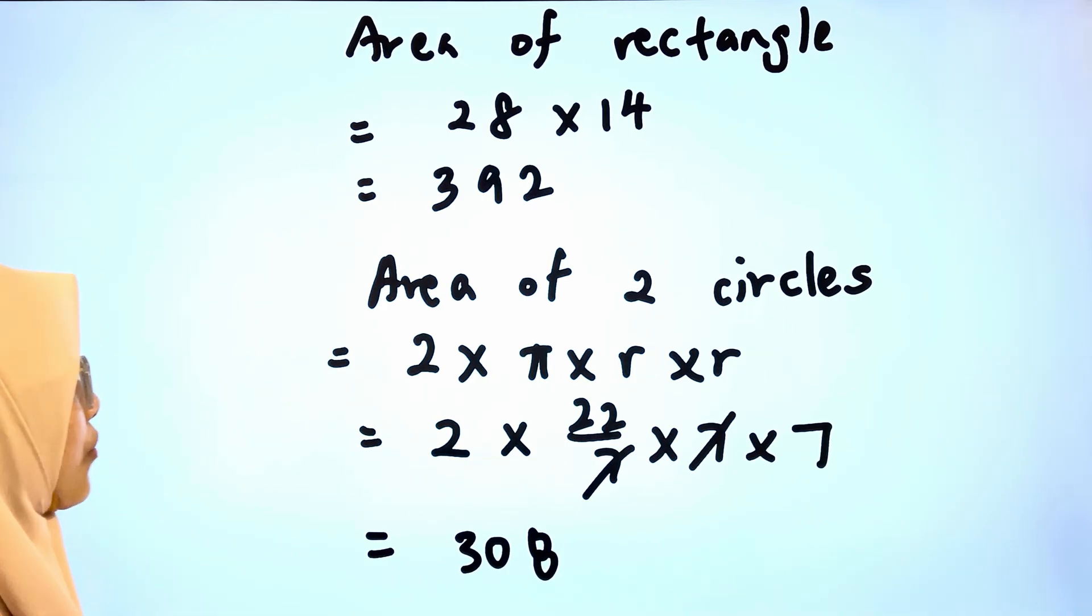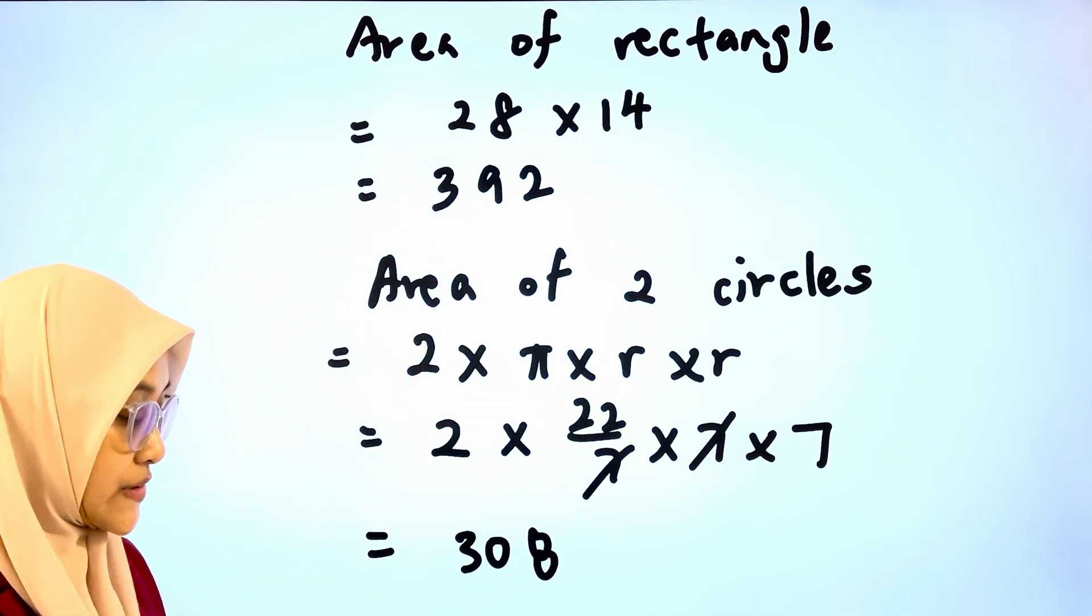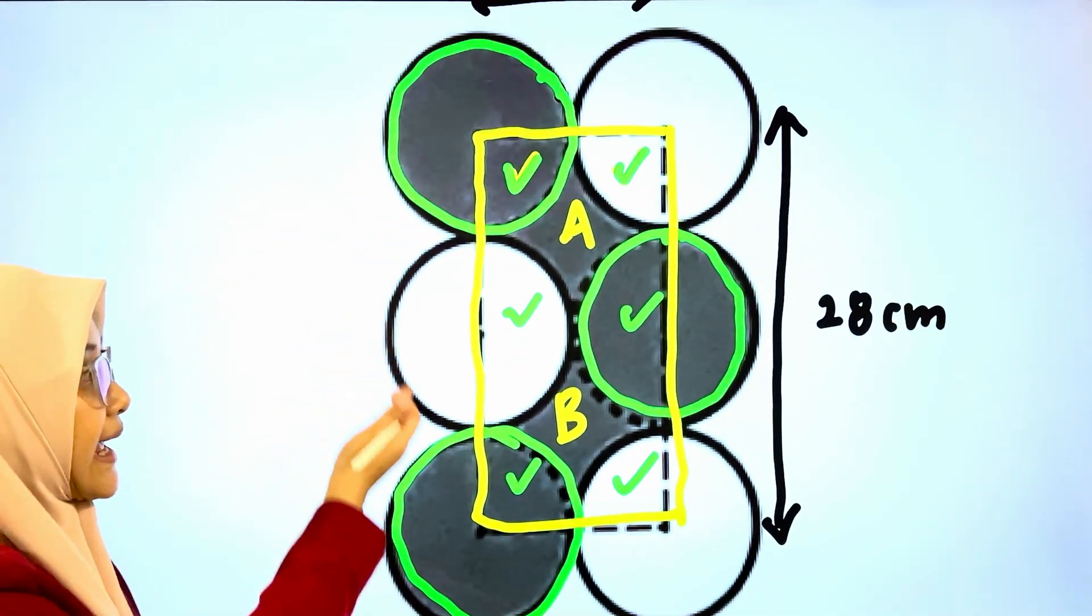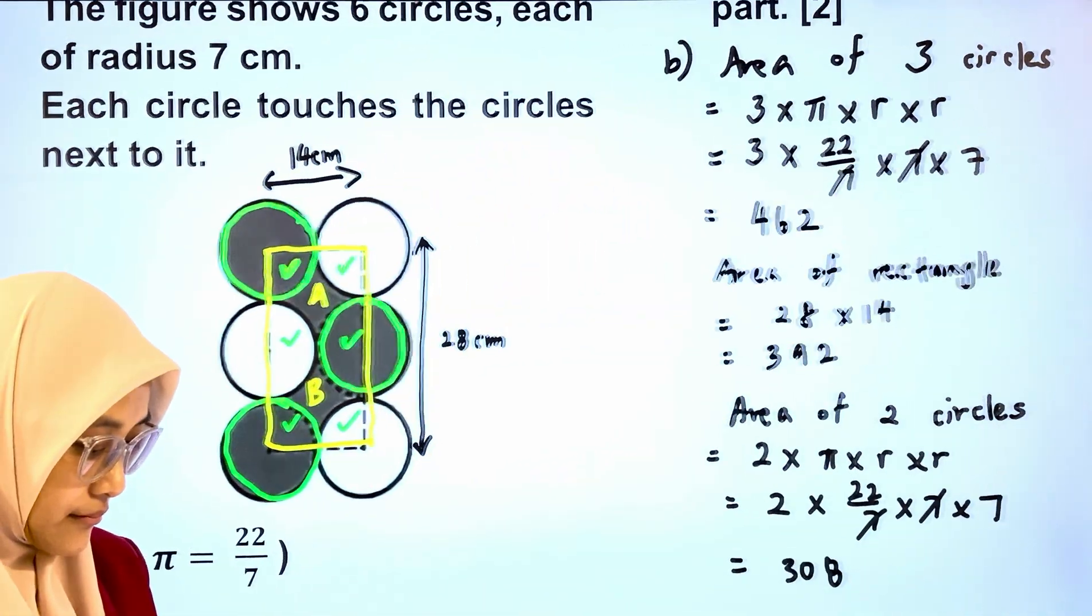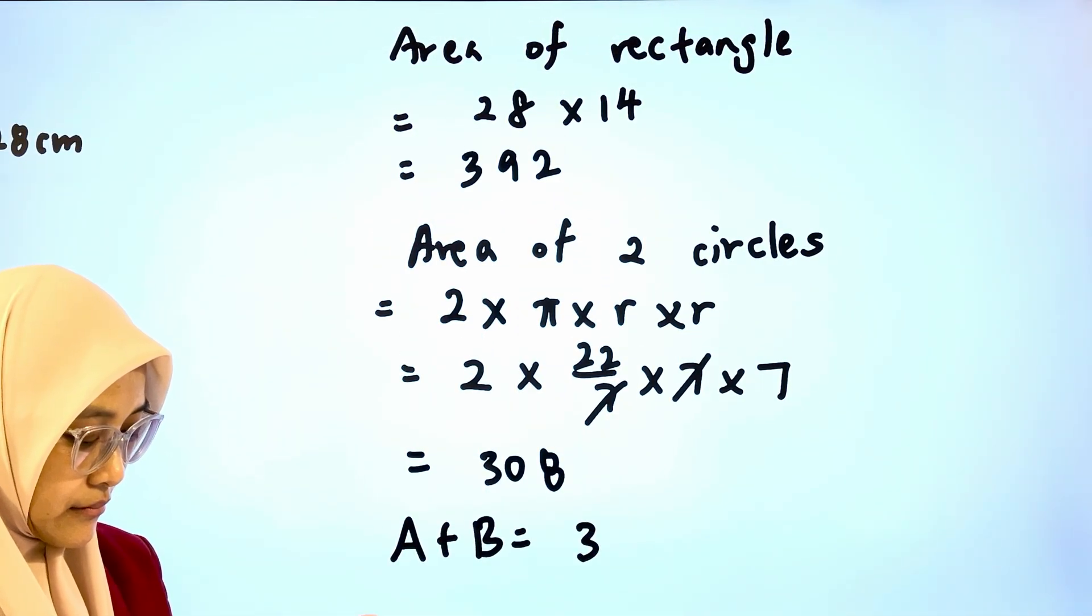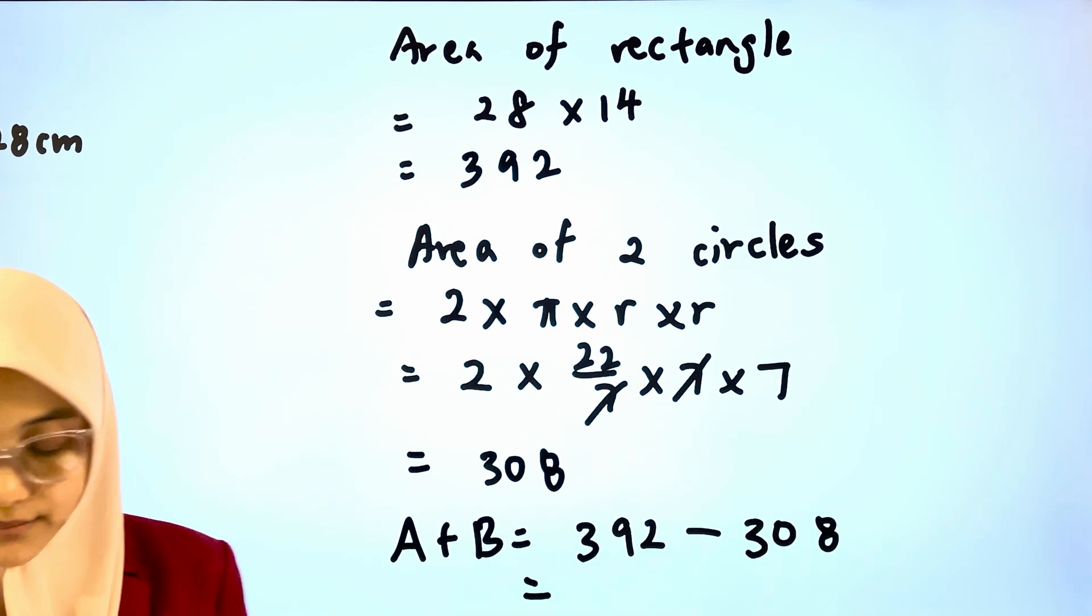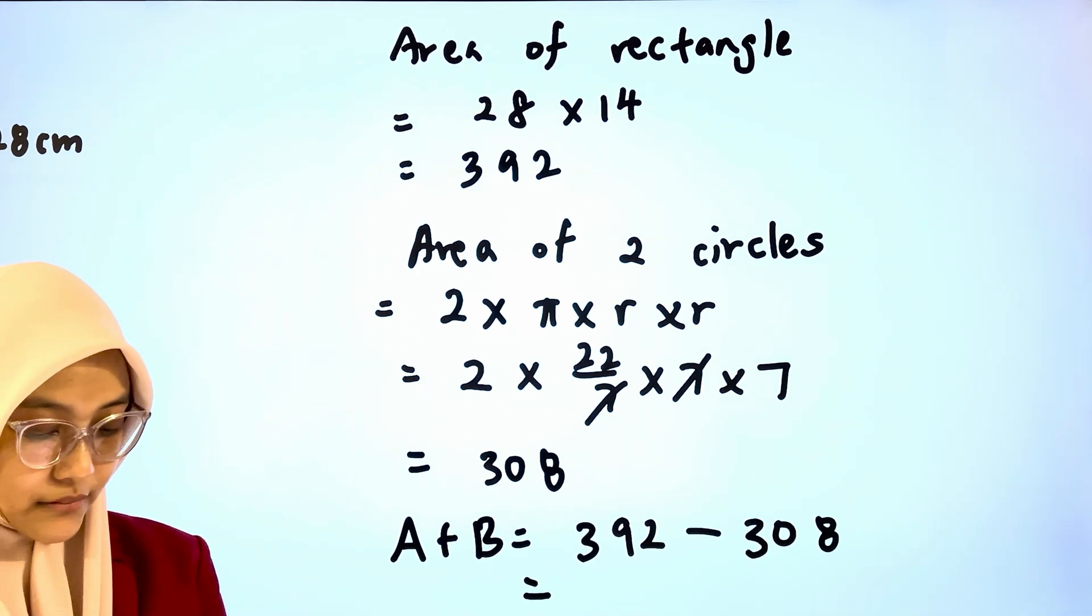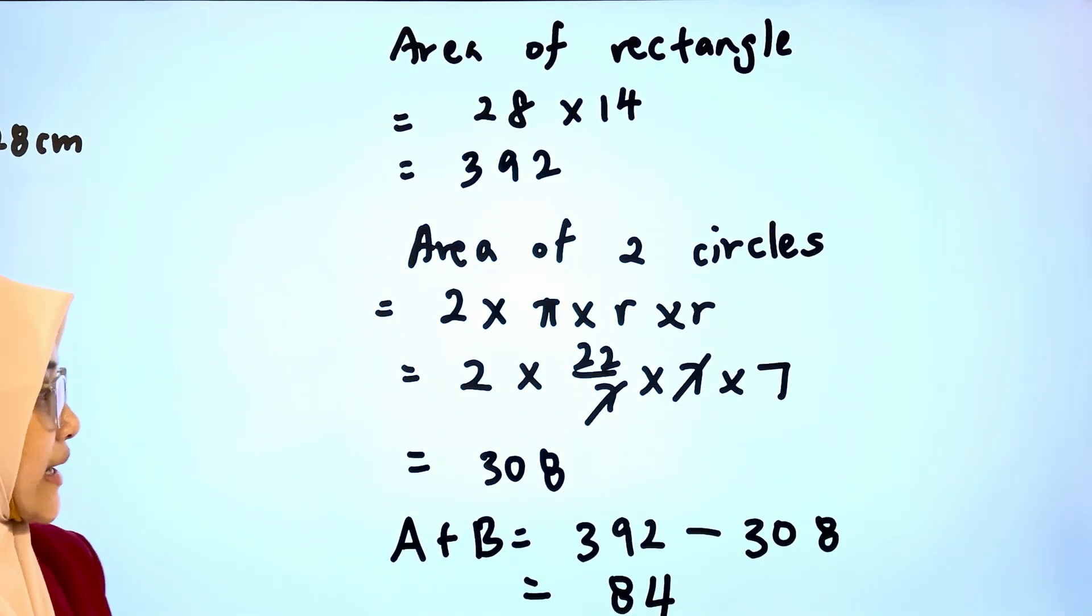And now by subtracting these two values we can find area of A and B. That is 84 square cm.